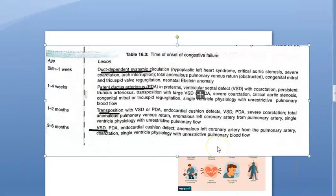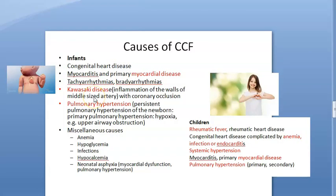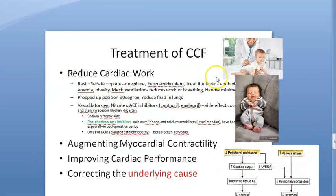Heart failure in children: based on onset, within one week of birth it could be duct-dependent systemic circulation; within the first month — patent ductus arteriosus; one to two months — transposition; two to six months — VSD. Causes can be congenital, Kawasaki disease, or rheumatic fever. It is difficult for a child to verbalize symptoms, so you need to know how to recognize them clinically.